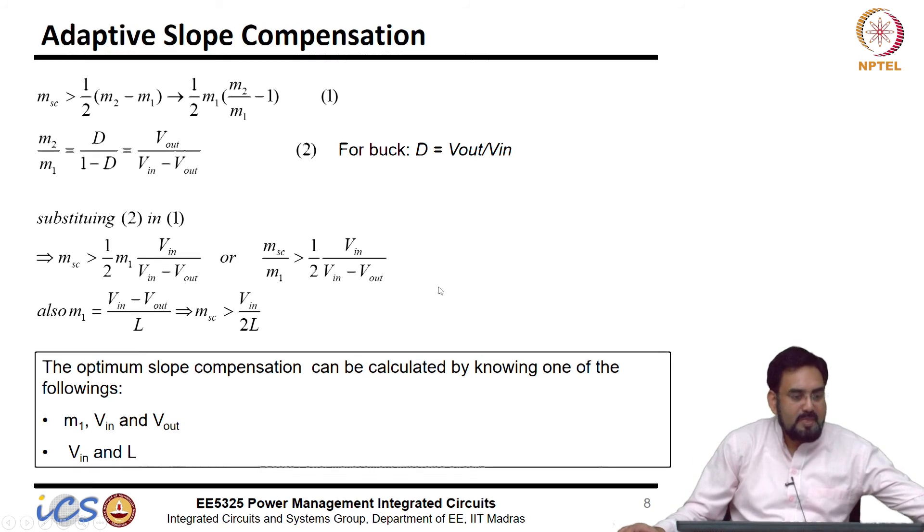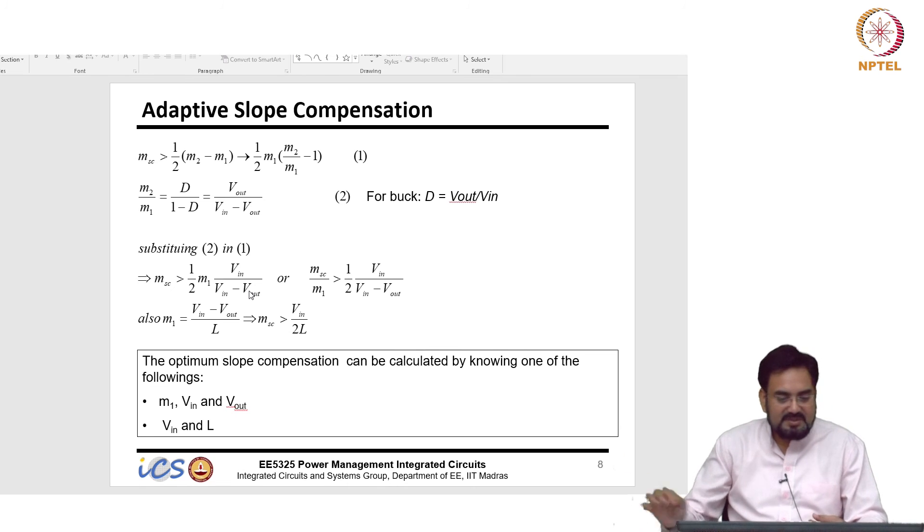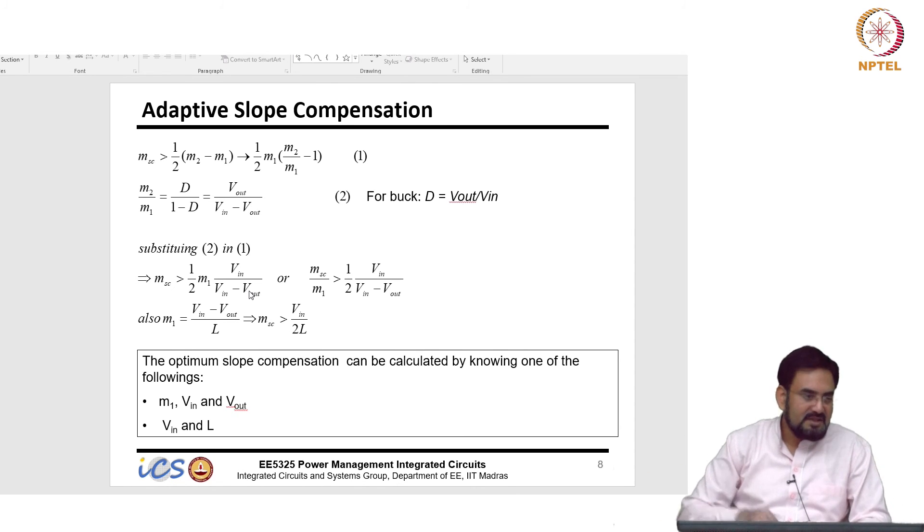So, we want to be closer to the accurate value and you can very well design this by using this equation and that is what we call it adaptive slope compensation. This was the one important thing to remember when you are designing current mode control. Rest of the compensation type 2 we already discussed and it looks more like LDO and you can always design current mode control type 2, but the slope compensation is something which is extra in this current mode control you need to take care of.